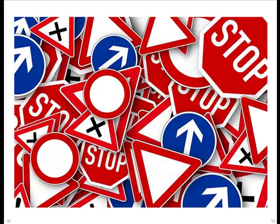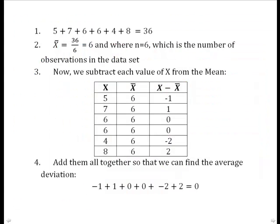Whoa, whoa, stop. We have got a huge problem, and I can't proceed. What's my problem? When I take these individual values, subtract them from the mean, add up all the differences, I get 0. And I'm always going to get 0.